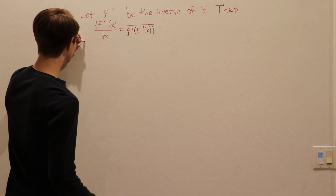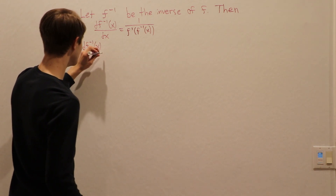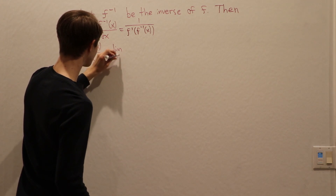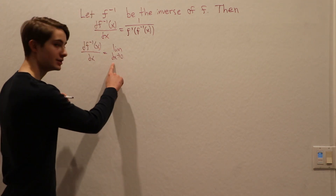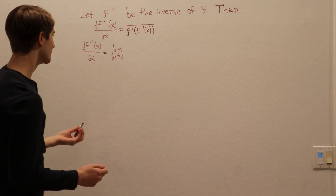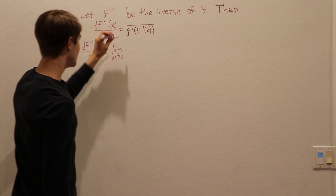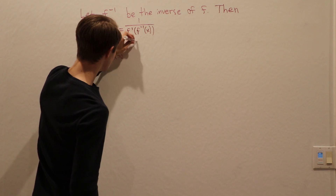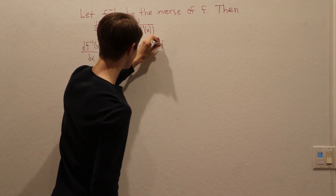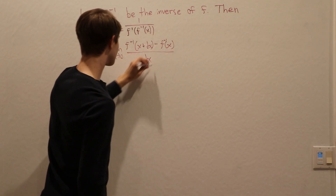In order to do this, let's write the derivative of the inverse function in terms of the limit. We know this is equal to the limit as dx approaches 0. If you've seen the more conventional version, we would write this as h, but I'm going to write it as dx. Our function is f inverse, so we have f inverse of x plus dx, minus f inverse of x, over dx.